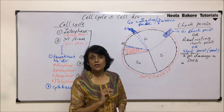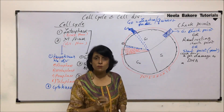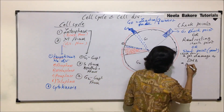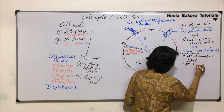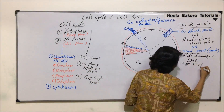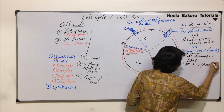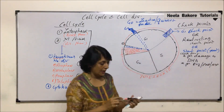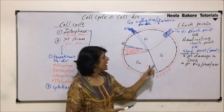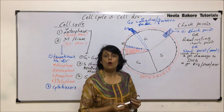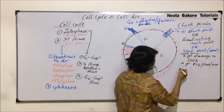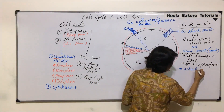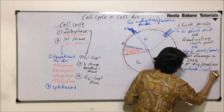The G1 checkpoint also checks whether enzymes are ready or not, whether sufficient ATP is produced or not — so it checks for enzymes, other proteins, and ATP. Towards the end of this checkpoint, it also activates cyclin.